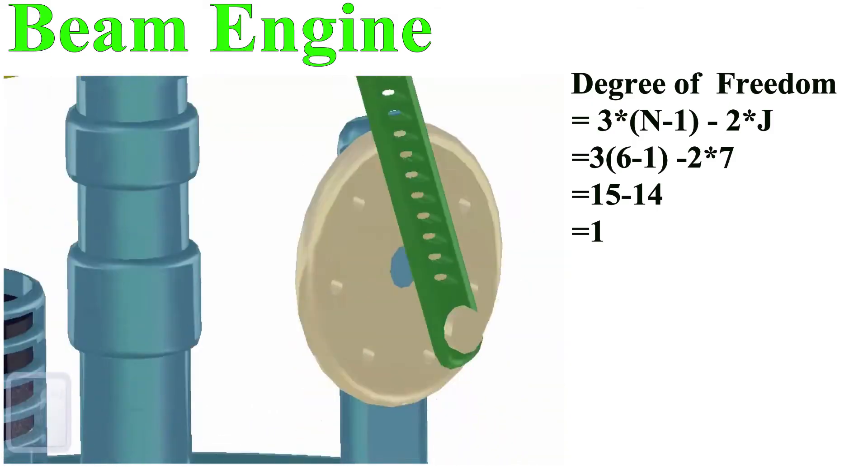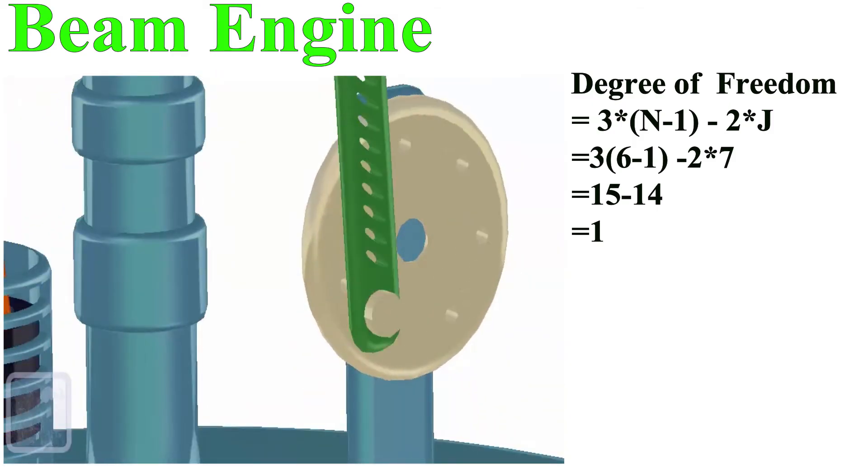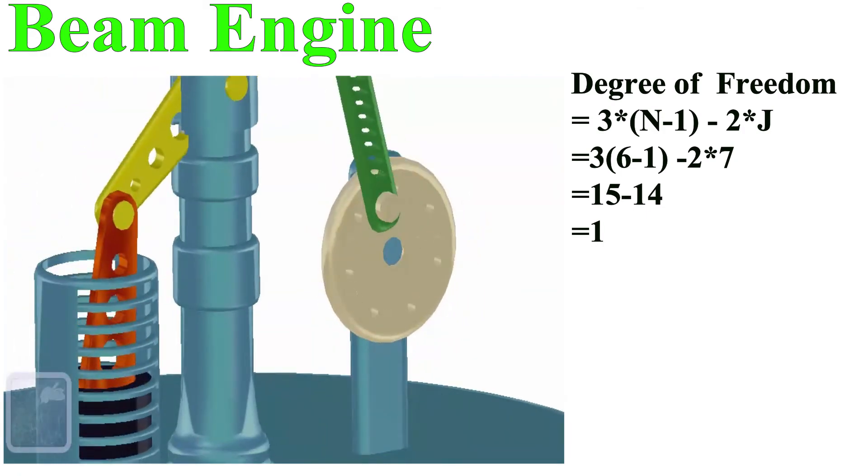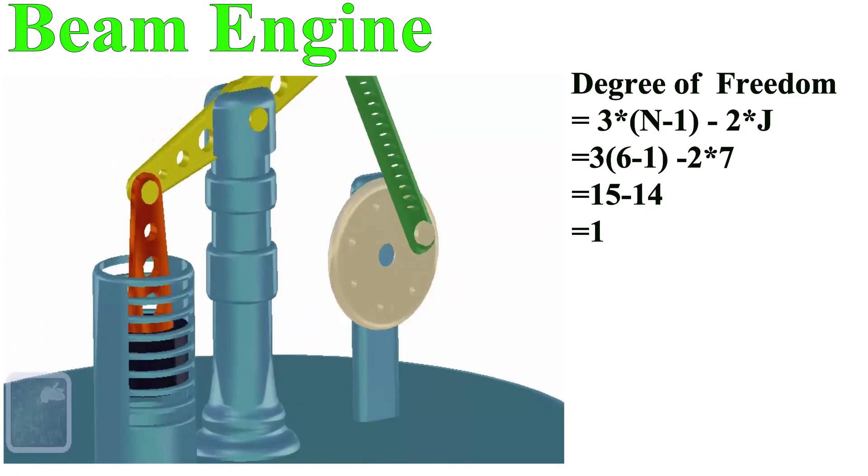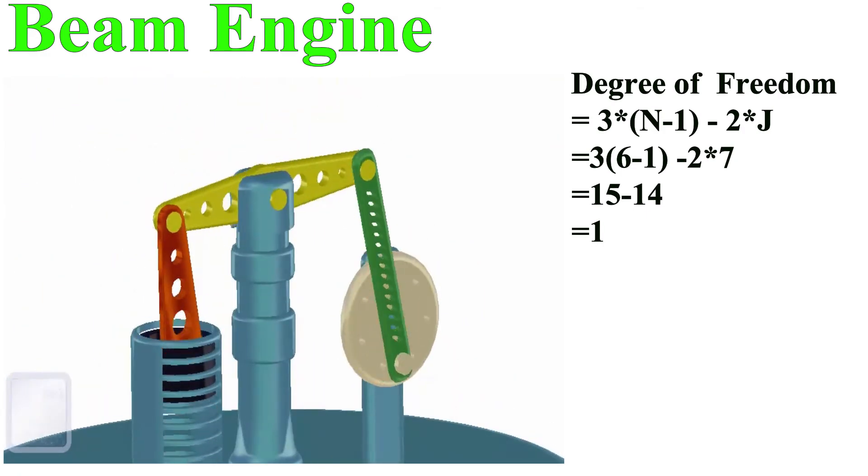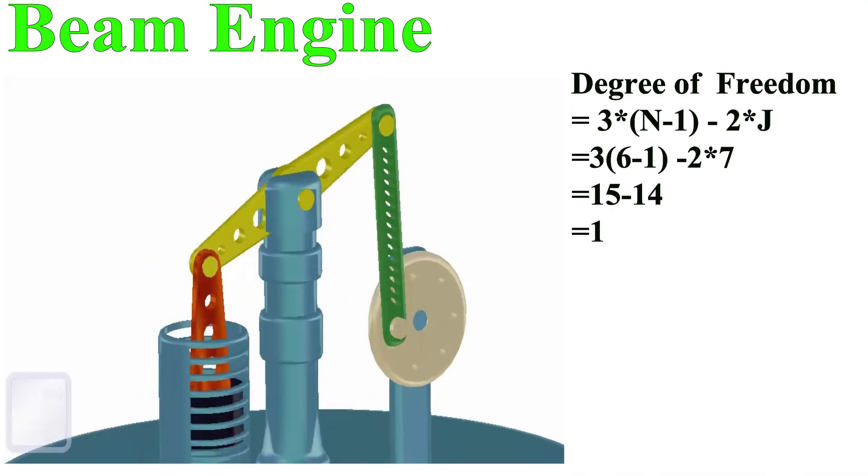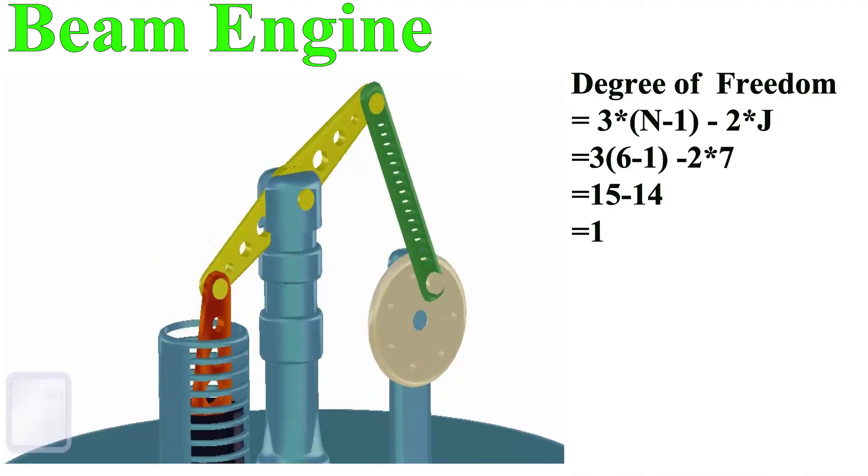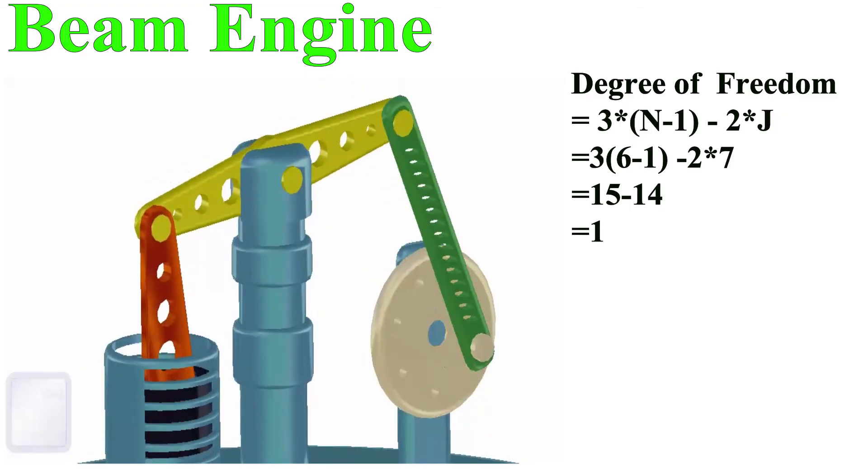Since the degree of freedom is 1, we require only one input—crank rotation—to produce the desired output. The purpose of this mechanism is to convert rotary motion into linear straight line motion.